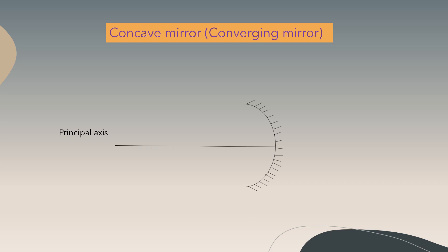The principal axis is a straight line that joins the pole of the mirror to its center of curvature. The pole is the geometrical center of the spherical surface of the mirror. We have the focus and the center of curvature. The center of curvature is the center of the sphere of which the mirror is a part. The focal length is the distance between the pole and the focus, and always remember that C equals 2F — the center of curvature is always double that of the focus.